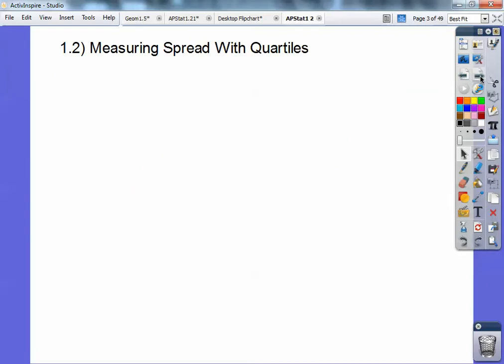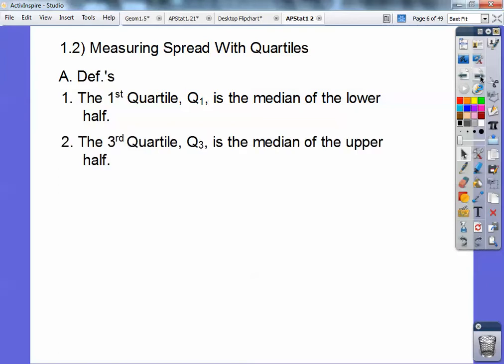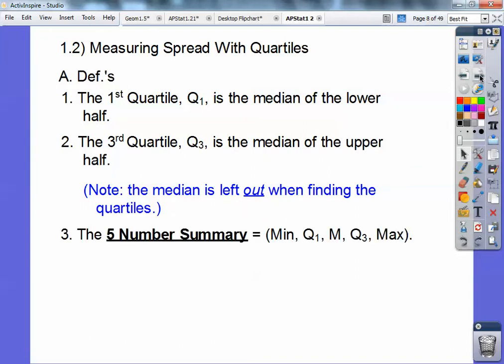All right. So the measures of spread with quartiles. Definitions. The first quartile, Q1, is the median of the lower half of data. Q3 is the third quartile, and that's the median of the upper half of data. You find the median, and then it divides into the lower half and upper half. When you find the median, then you leave that out when finding the quartiles. I have an example coming up.